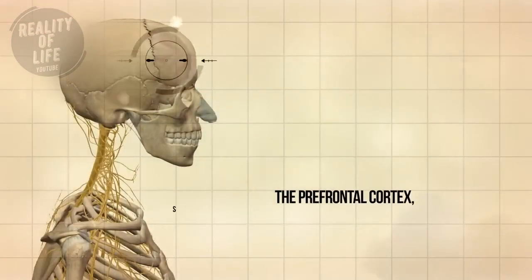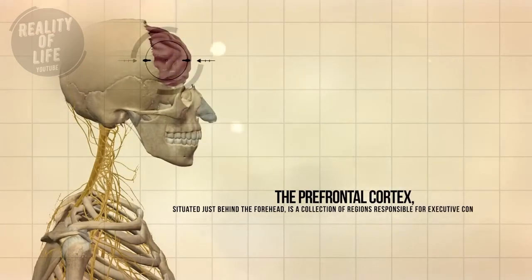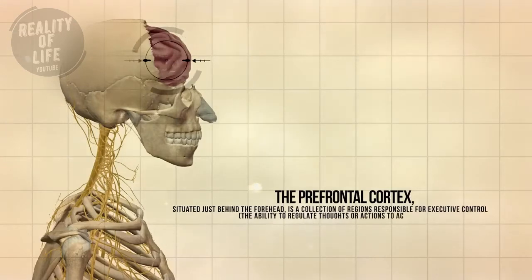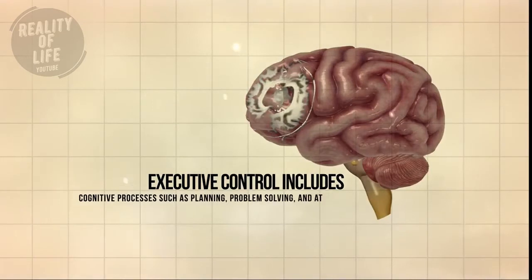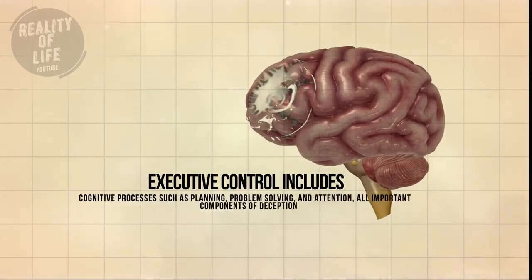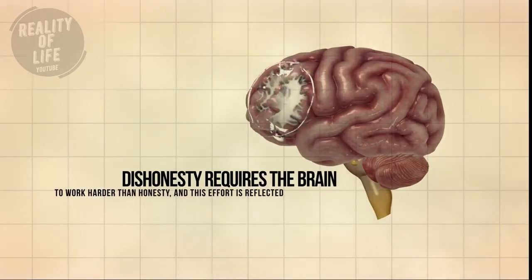The prefrontal cortex, situated just behind the forehead, is a collection of regions responsible for executive control — the ability to regulate thoughts or actions to achieve goals. Executive control includes cognitive processes such as planning, problem-solving, and attention, all important components of deception. Dishonesty requires the brain to work harder than honesty, and this effort is reflected by increased brain activity.